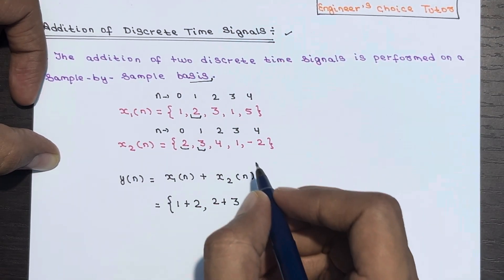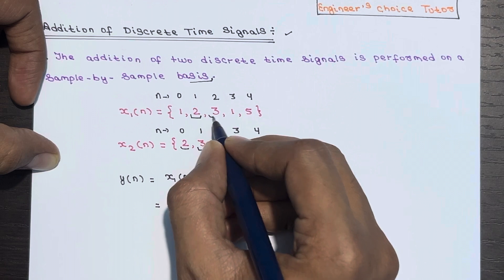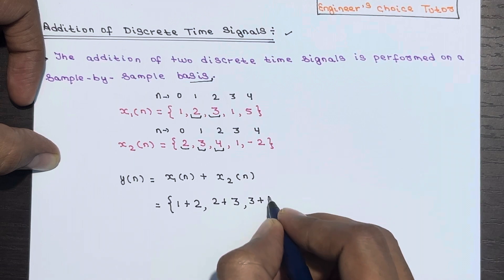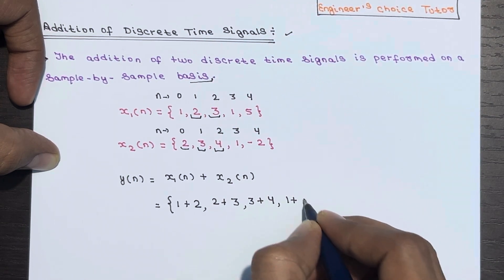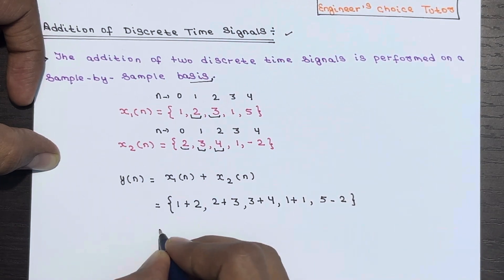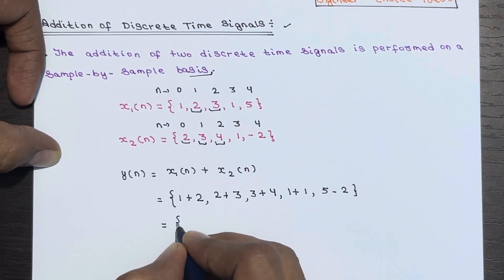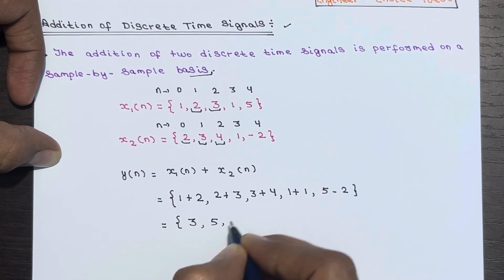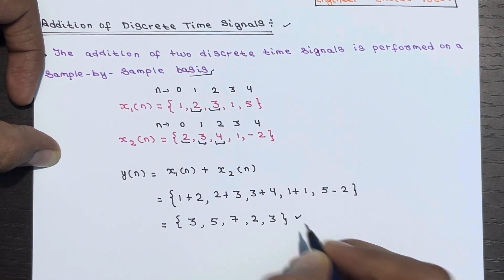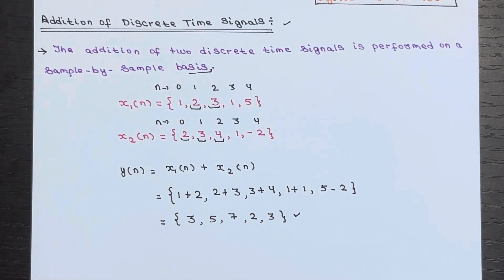At n equal to 2: x1(n) is 3, plus x2(n) which is 4. This is how you calculate — this is the short form to do things easily. Solving it, you get the resultant signal y(n) as: 3, 5, 7, 2, and 3. Now let's move on to subtraction.